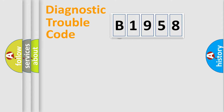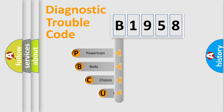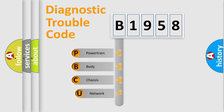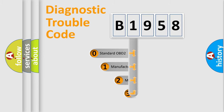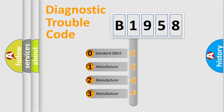First, let's look at the history of diagnostic fault code composition according to the OBD2 protocol, which is unified for all automakers since 2000. We divide the electric system of automobile into four basic units: Powertrain, Body, Chassis, and Network. This distribution is defined in the first character of the code.